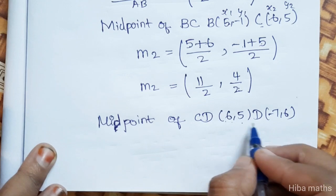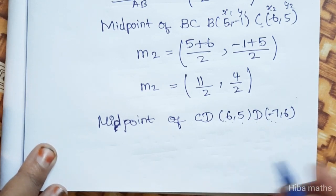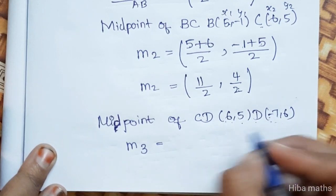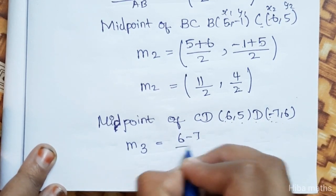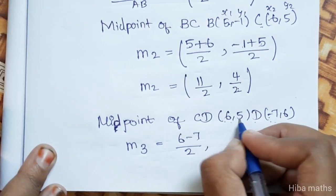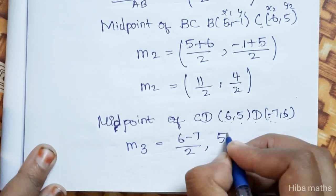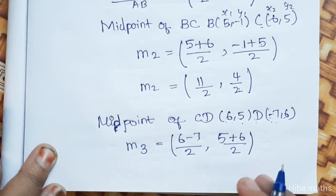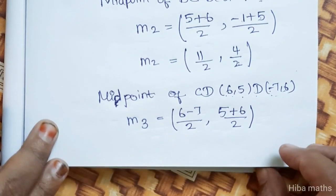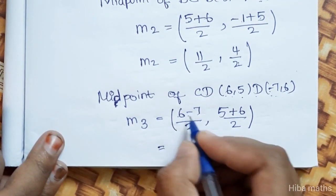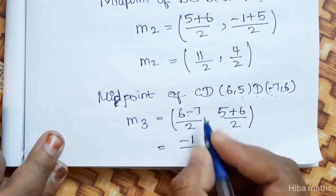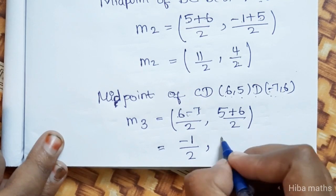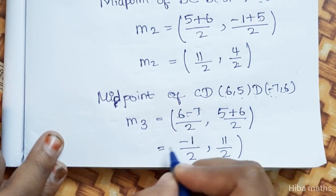Midpoint of CD is M3. C value is 6, 5 and D value is minus 7, 6. Applying the midpoint formula: x1 plus x2 is 6 plus minus 7 divided by 2, giving minus 1 by 2. And y1 plus y2 is 5 plus 6 divided by 2, giving 11 by 2. So M3 is (-1/2, 11/2).